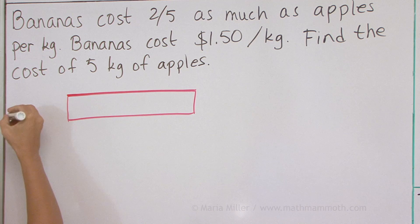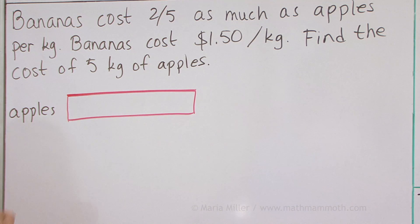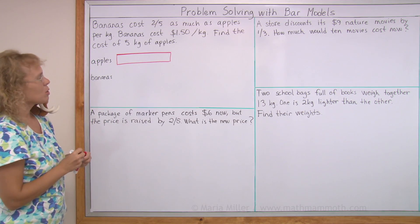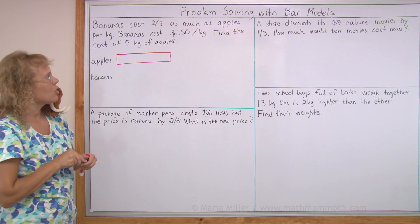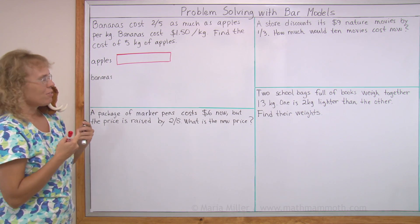And I'll write here apples. It actually is the price of apples per kilogram. And then the bananas. Bananas cost two-fifths as much. I need to use this fraction, two-fifths.